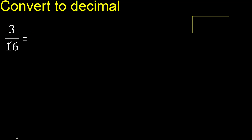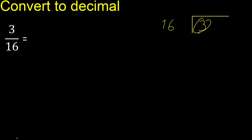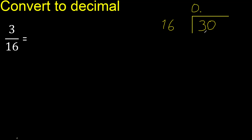3 divided by 16. 3 is less, therefore complete — always complete with 0. Here: 0 point.